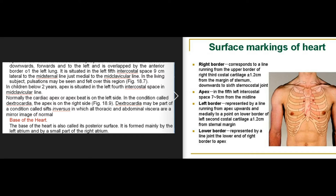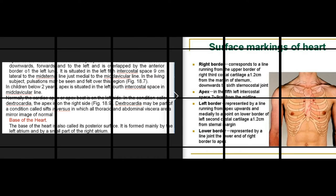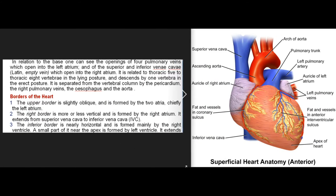The base of the heart, also called its posterior surface, is formed mainly by the left atrium and a small part of the right atrium. It shows the openings of four pulmonary veins into the left atrium. It is related to thoracic vertebrae T5 to T8 in the lying posture and descends by one vertebra in the erect posture. It is separated from the vertebral column by the pericardium, the right pulmonary veins, the esophagus, and the aorta.